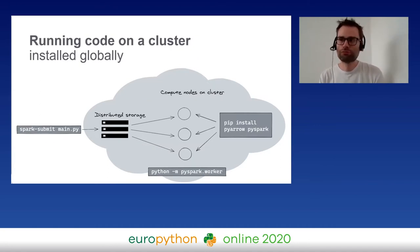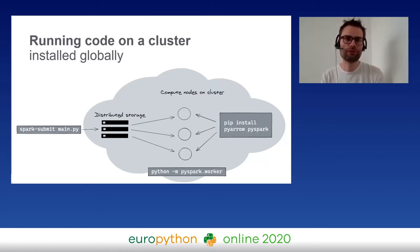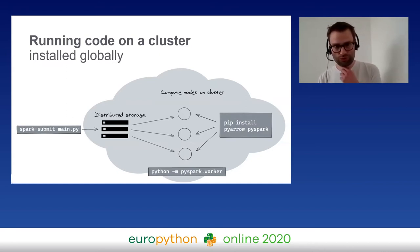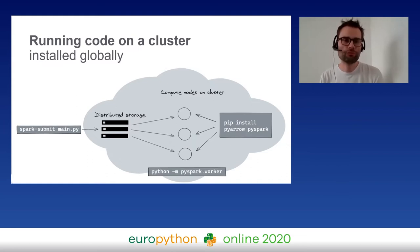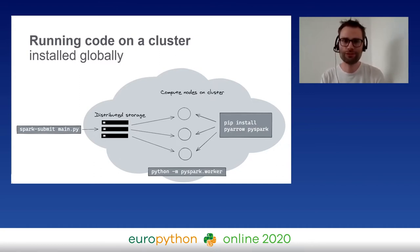What you could do is install on each compute node: install PyArrow and PySpark, and then when you run it again, it will find them. Also, the standard Python way to deploy jobs is using spark-submit, which is a bit more complicated than the default use case.